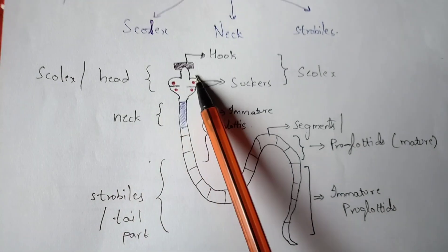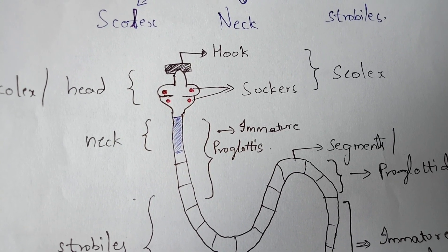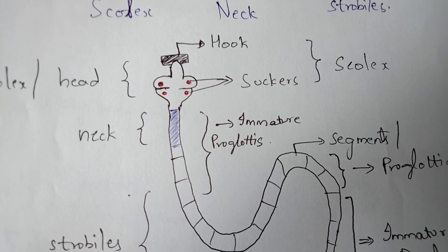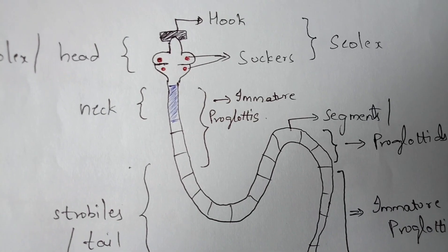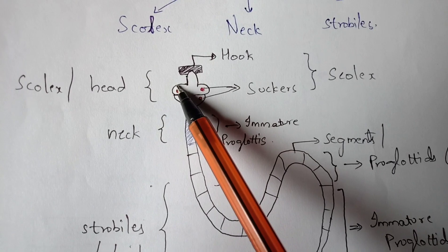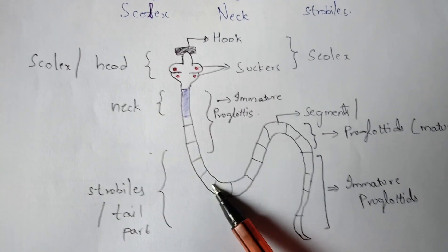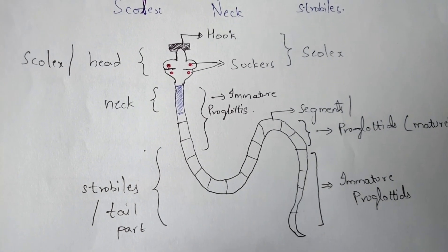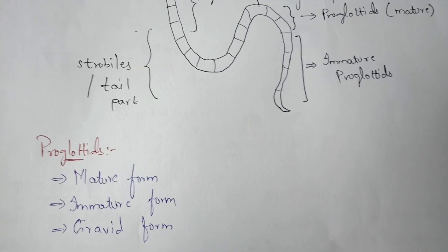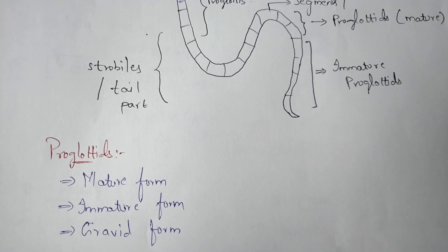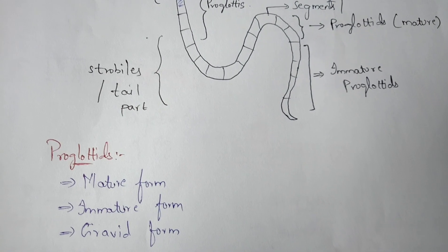The black-colored structure on the scolex is known as the hook. The main function of the hook is to help in holding the tapeworm inside the small intestine — it fixes the tapeworm over the walls of the small intestine so it doesn't undergo locomotion. The scolex is the head region, the neck region follows, and the entire tail part is the strobila, composed of proglottids — mature, immature, and gravid forms.